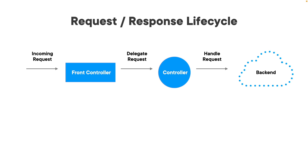Our backend could be composed of web services or a database, multiple databases, or any number of things that we're gathering data from. In turn, what that does is hand back a model to us. The model is basically just our data that we're trying to represent on our screen or through a service.